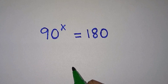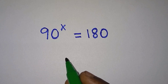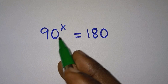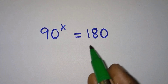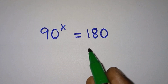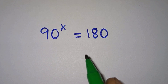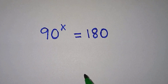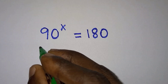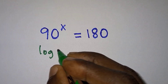Hello everyone. In this video we have this little interesting problem: 90 to the power x is equal to 180, and we have to find the value of x. Now let's get started. First of all, let's introduce log in base 10 on each side of the equation.